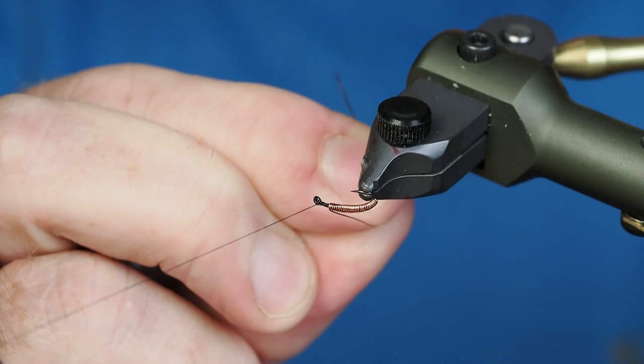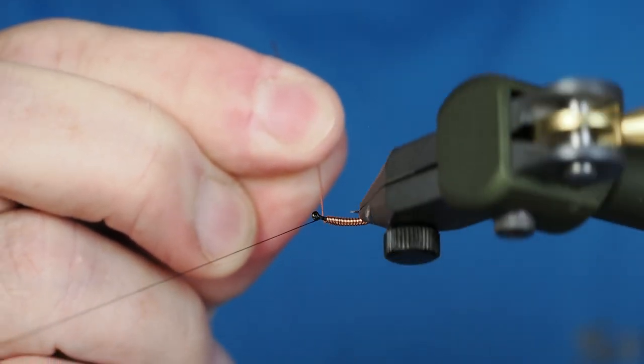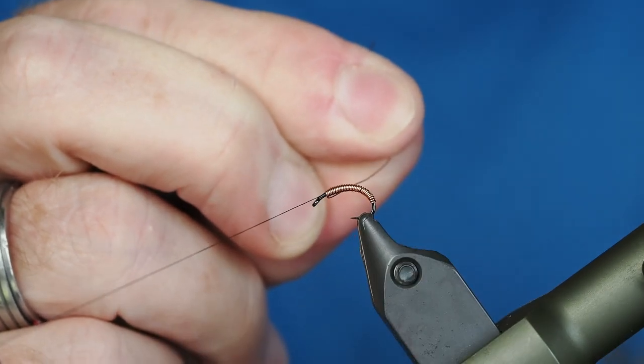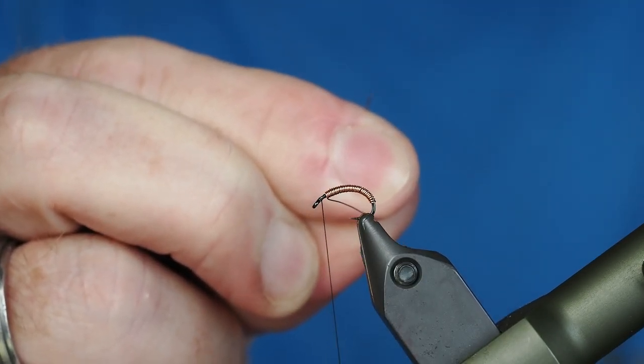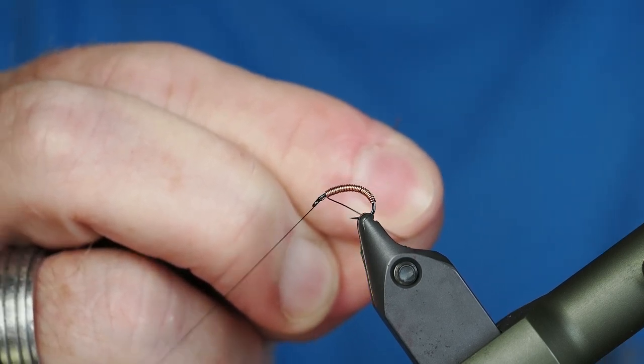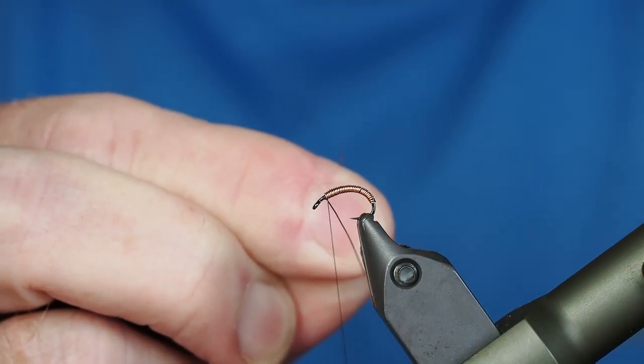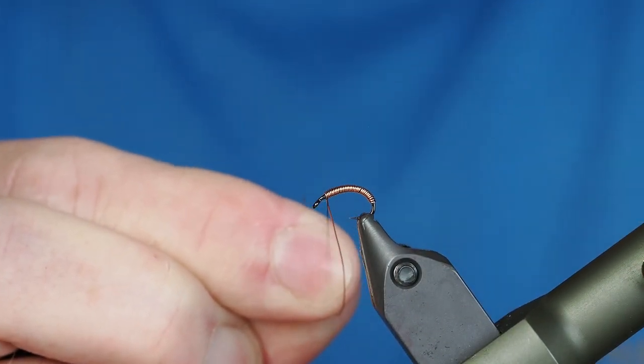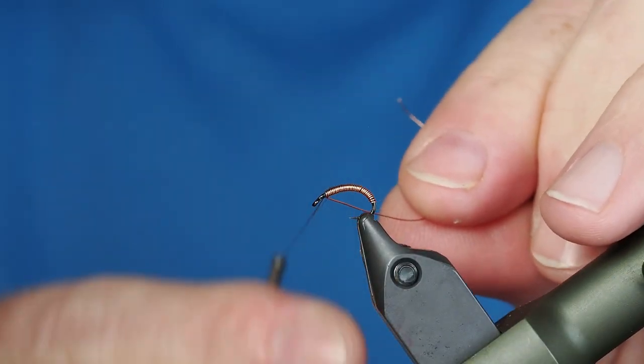I'm gonna take it to about right here. We'll take our thread off of our bobbin cradle, tighten it up just a little bit, and take a wrap over the top of that copper wire. I'm gonna take a couple of wraps on the other side of it, and then we'll just go ahead and helicopter this off.